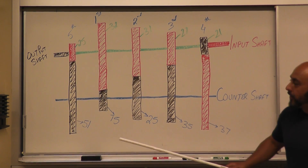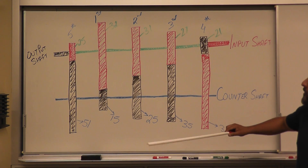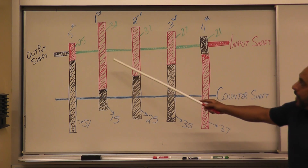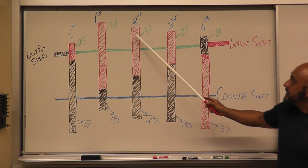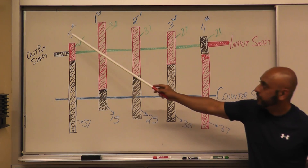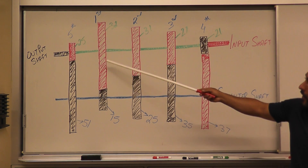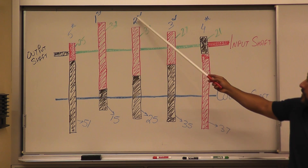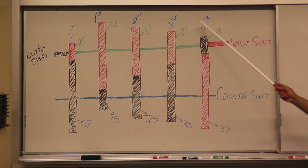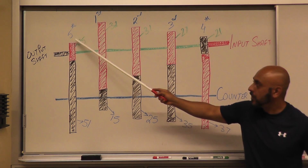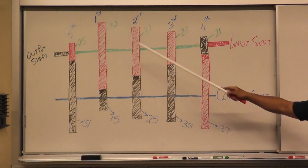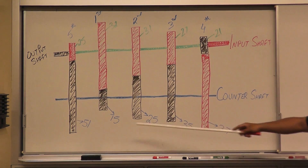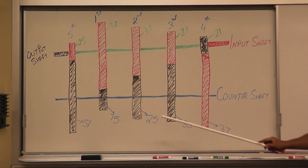I've attempted to draw the same diagram replicating the transmission. We have our first gear, second gear, third gear, fourth gear, and fifth gear, and the number of teeth on each gear. First gear has 32 teeth, second 31, third 27, fourth 21, and fifth has 25 teeth. On the counter shaft, we have 51 teeth, 15, 25, 35, and 37.